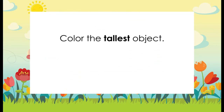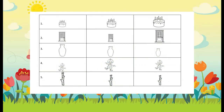Now we're going to move on to the next page. Here we're going to color the tallest object. The first picture you're going to see is the cake. Which one is the tallest? Now you're going to color that — it's easy, right? That's the last one. So number two, that's a door.